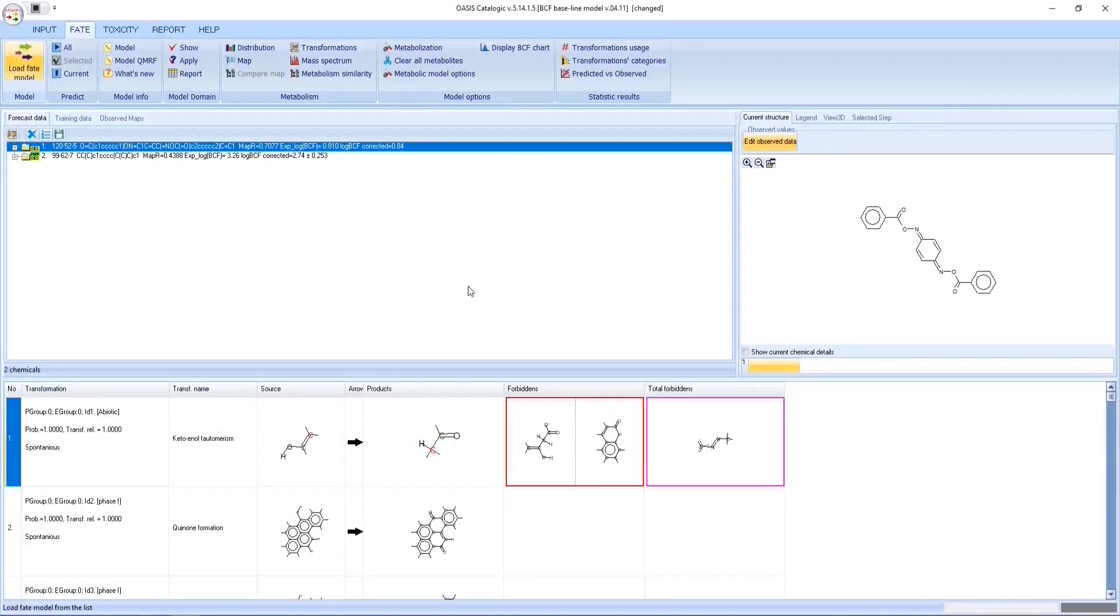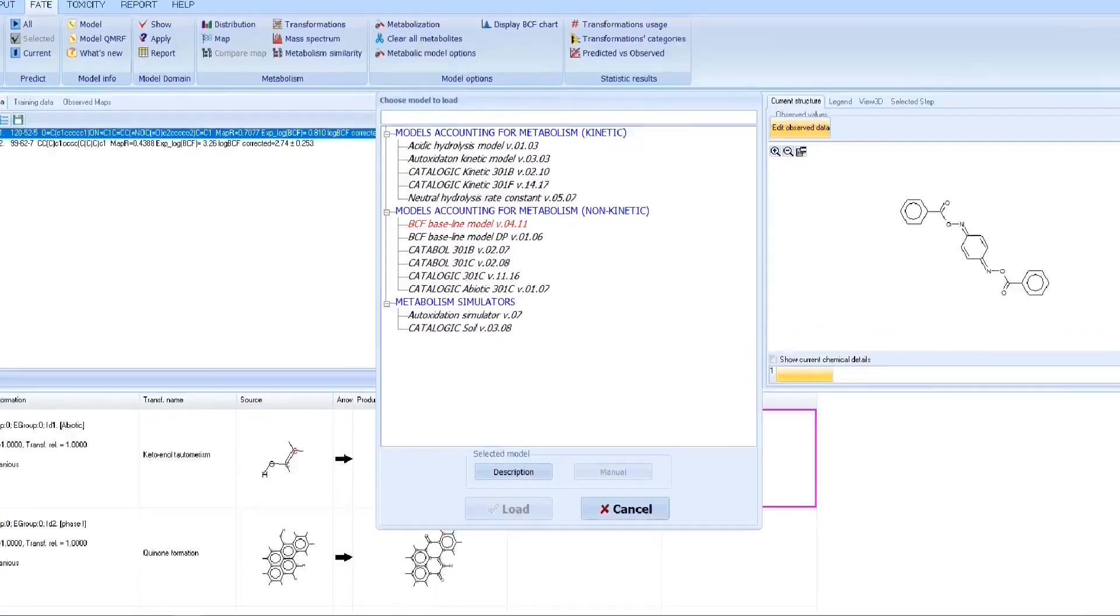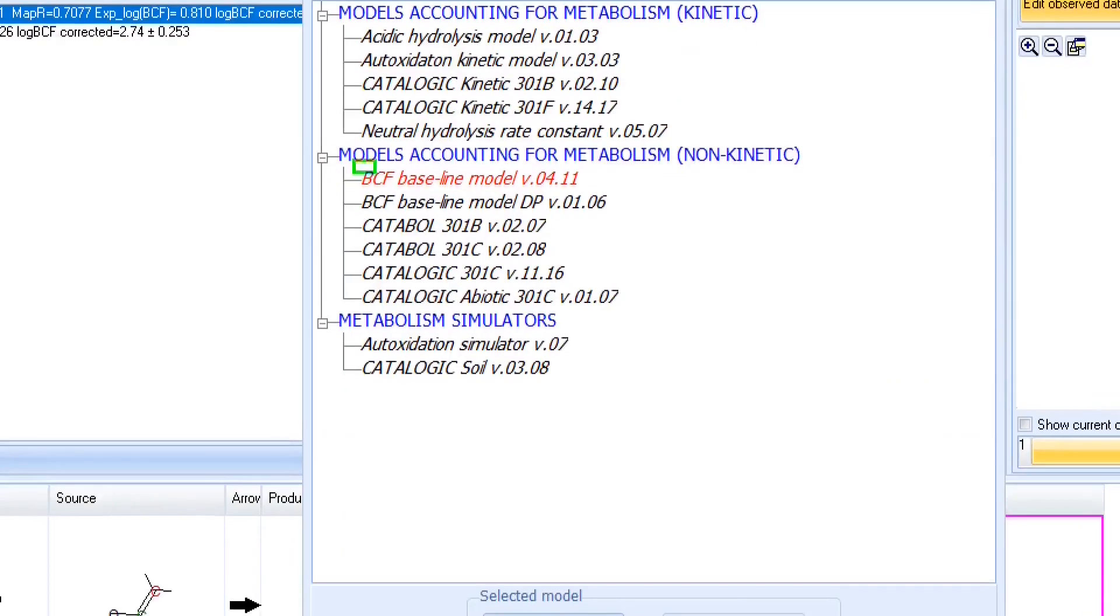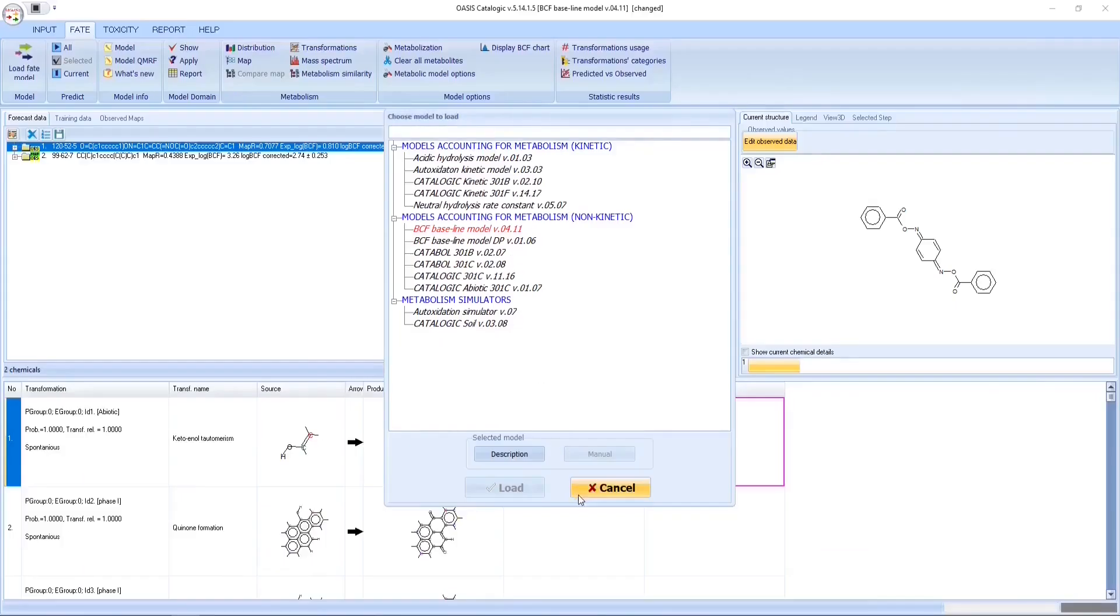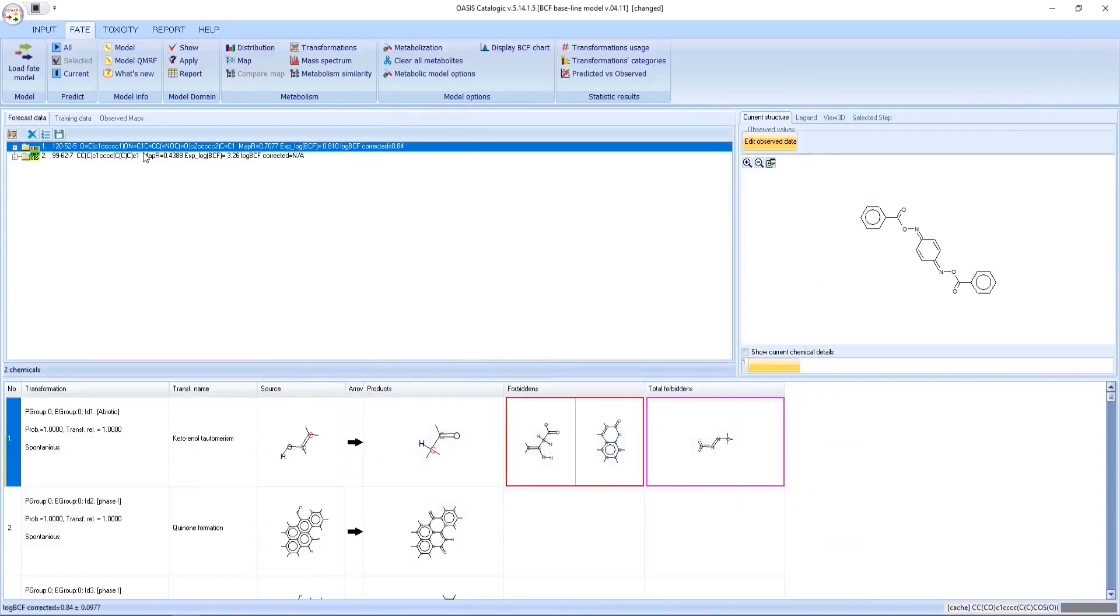Along with the models for prediction of abiotic and biotic degradation, BCF Baseline model for revelation of bioaccumulation of organic chemicals is available in CATALOGIC software.